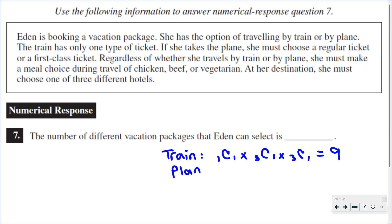Now if she chooses to travel by plane, she has a choice of two tickets. So two tickets, and then still a choice of one of three meals and a choice of one of three hotels. So multiplying those together, I get 18.